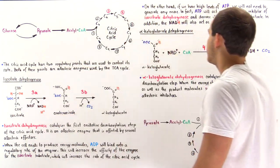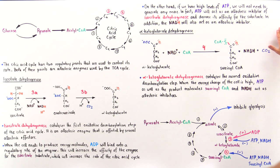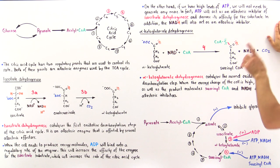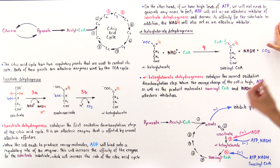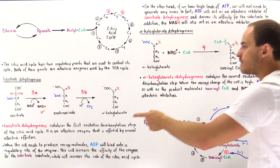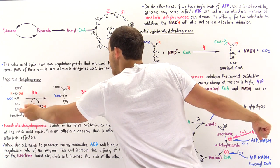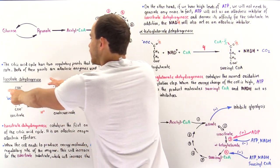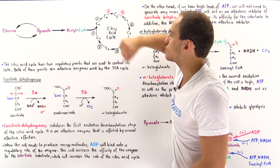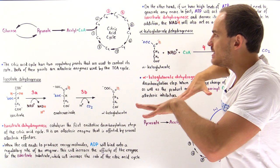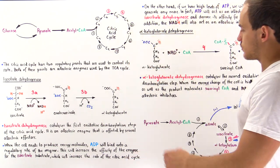So if we have high levels of ATP and a high energy charge value, we will not need to generate any more ATP. ATP acts as an allosteric inhibitor of isocitrate dehydrogenase, decreasing its affinity for the substrate. In addition, NADH kicks off the NAD+ needed for step 3A to take place, inhibiting the activity of isocitrate dehydrogenase and decreasing the rate of the citric acid cycle.